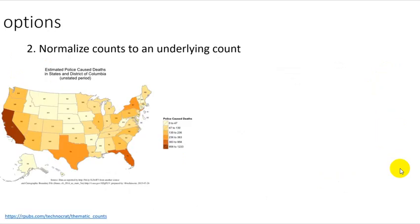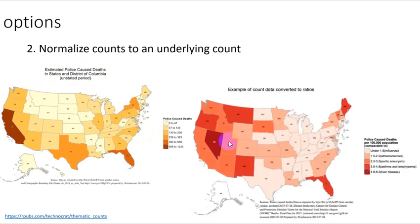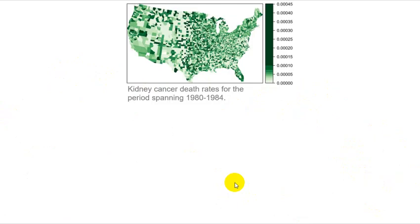This is what I think I was getting at. Normalizing counts to the underlying count. So estimated police caused death in states and districts. And then this would be the number divided by the total population for the state. So not divided by the area of the state, but the number of people, the number of police caused deaths per 100,000 people. So a way of normalizing by another value instead of the state area. You'd be dividing by the population of the area.